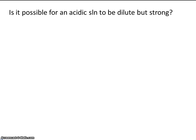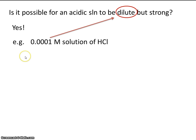So here's a couple quick review questions that will help you test your understanding of the differences between strength and concentration. Is it possible for an acidic solution to be dilute but strong? Sure it's possible. And here's an example. Let's say we have a 0.0001 molar solution of hydrochloric acid. Well you know that 0.0001 molar is pretty dilute. But you also know that hydrochloric acid is considered a strong acid. So this solution here would be considered dilute but strong.